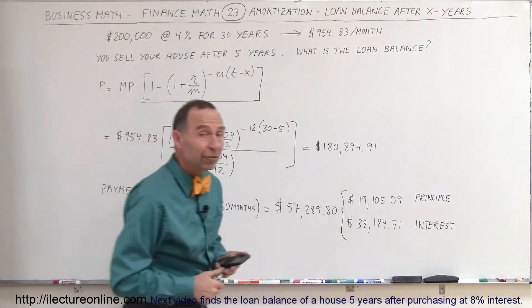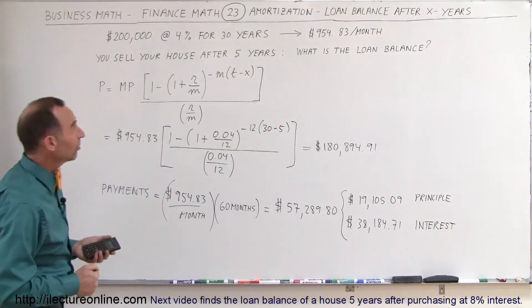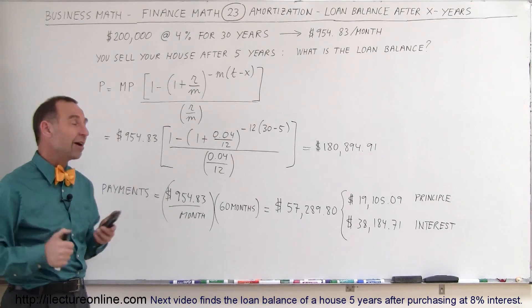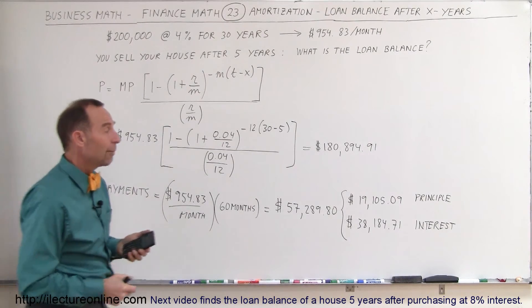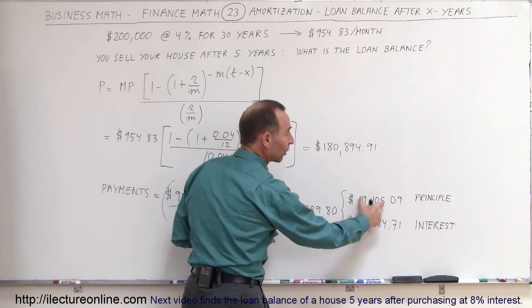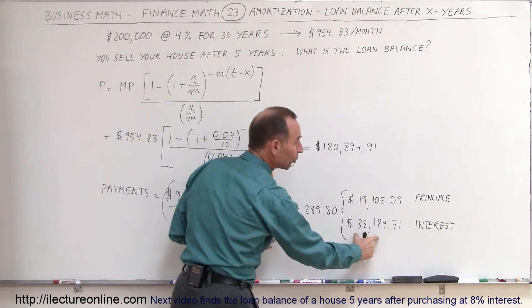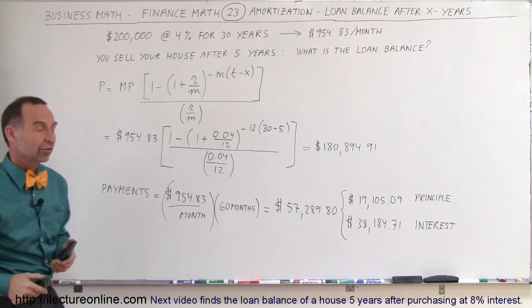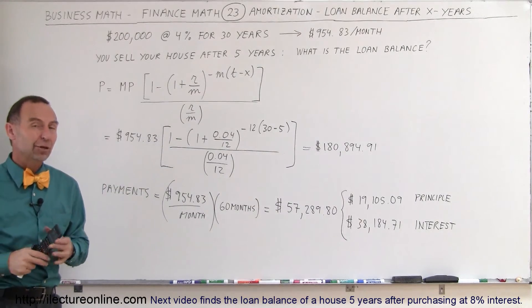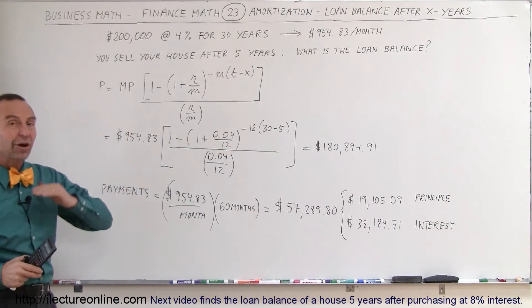So here you can say, if the interest rates are 4%, and you get a loan for 30 years, and you pay for five years, after five years, about a third of what you paid actually went into paying off the loan, and two-thirds of what you paid actually went to interest. And in actuality, that isn't that bad, because it can be a lot worse when the interest rates are higher.